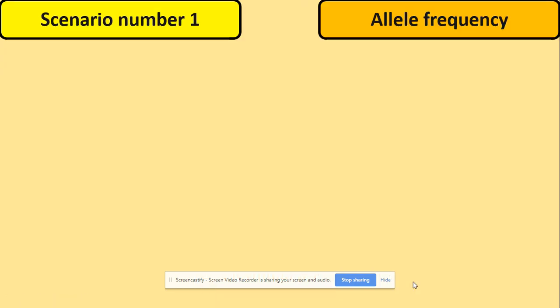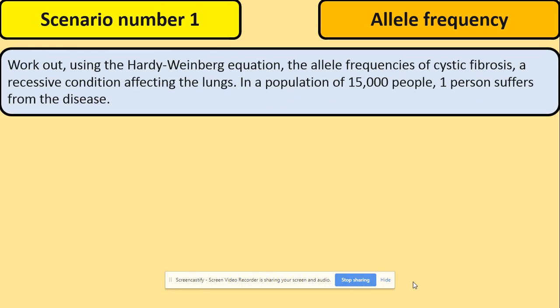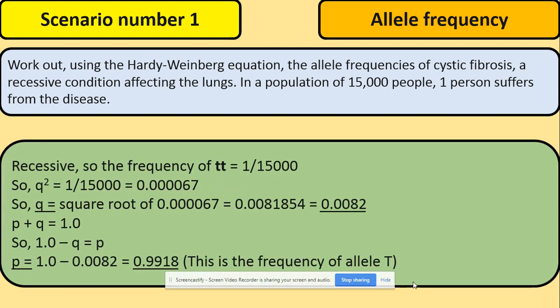So let's have a look at a few scenarios. We've got first past paper questions. They're asking you to work out the allele frequency of cystic fibrosis, a recessive condition affecting the lungs, in a population of 15,000 people. One person suffers from the disease. So how do we do it? We know that it's a recessive condition and one person, so that refers to the genotype, to the phenotype.